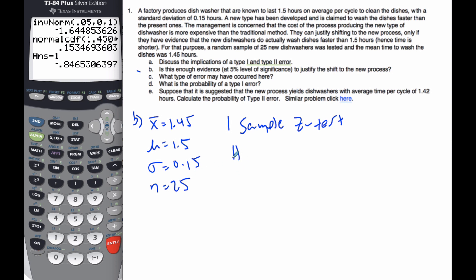I am going to do a 1 sample z test because I know the standard deviation of the population. And so my null hypothesis says that mu equals 1.5, whereas my alternative hypothesis, well, I want it to be faster. I want the mu to be faster so the time is less. I'm not caring about if it's bigger than 1.5. I want it to be less than 1.5.